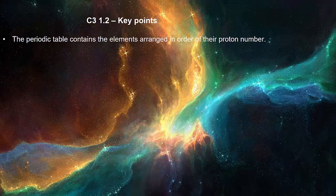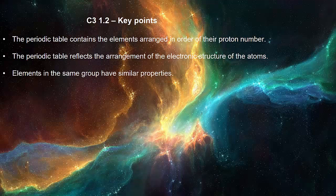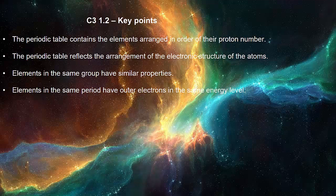The periodic table contains the elements arranged in order of their proton number. The periodic table reflects the arrangement of the electronic structure of the atoms. Elements in the same group have similar properties. Elements in the same period have outer electrons in the same energy level.